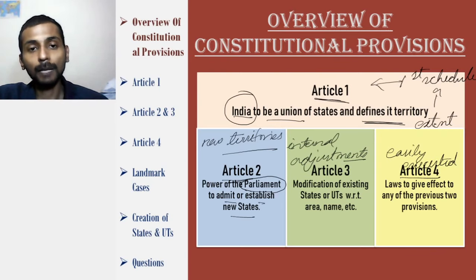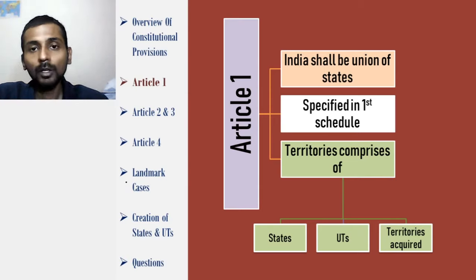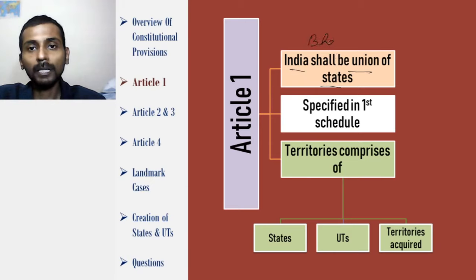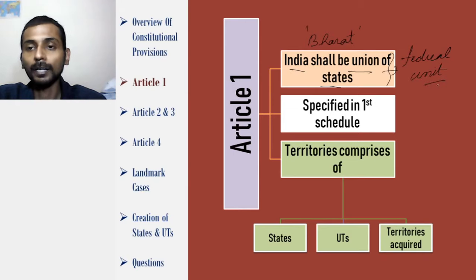Now let's examine these articles one by one. Article 1 basically talks about what is India. It defines India to be a union of states. It further also gives another name to India, that is Bharat, and it is supposed to be a union of states. Union of states here stands for the federal unit of India. This is Clause 1 of Article 1.